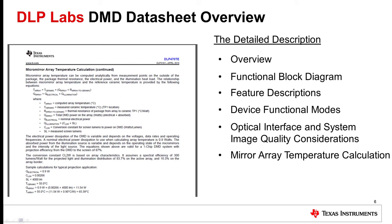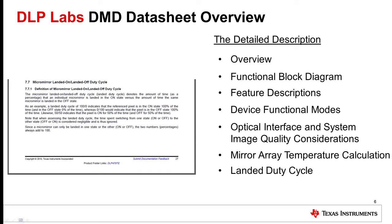It is important to calculate array temperature and maintain a temperature within the recommended operating conditions in order to ensure reliable operation of the DMD over its lifetime. The last portion of the detailed description section covers the topic of landed duty cycle. The micromirrors on a DMD must be able to transition from the on to the off state and back in order to make the image on screen. The micromirror landed on versus landed off duty cycle denotes the amount of time, as a percentage, that an individual micromirror is landed in the on state versus the off state. This section describes how to measure the landed duty cycle.